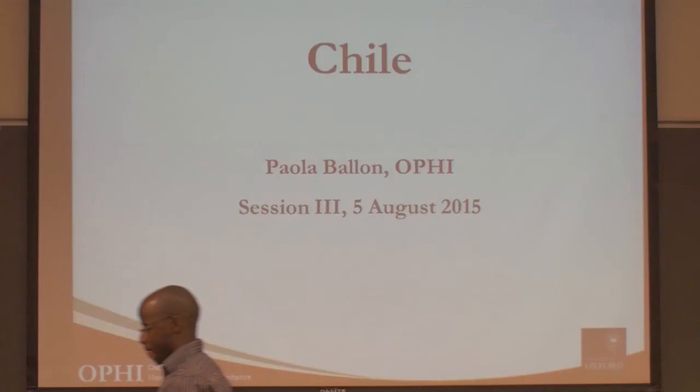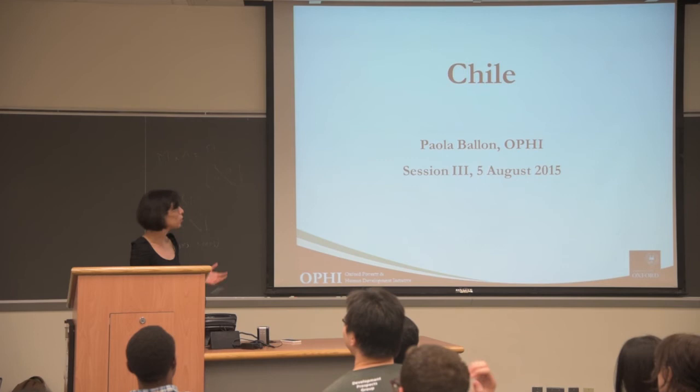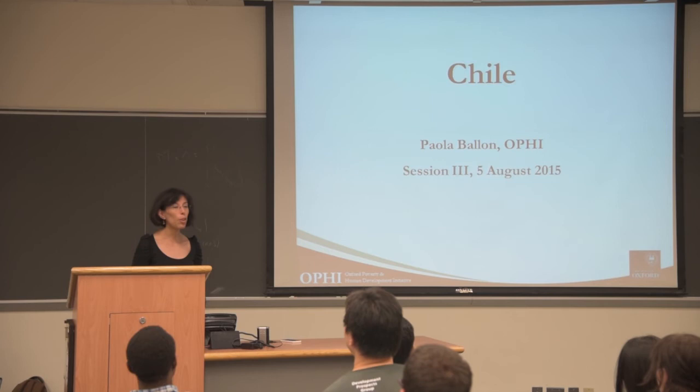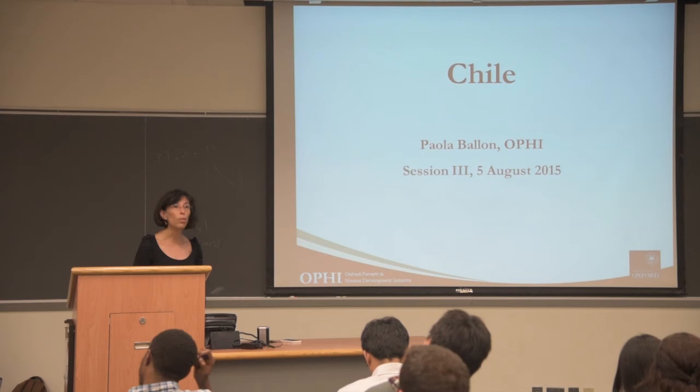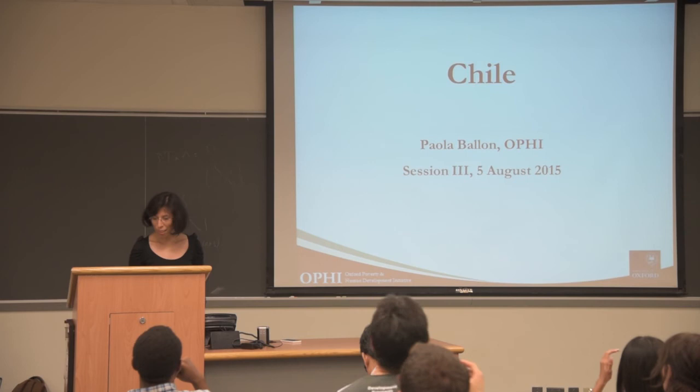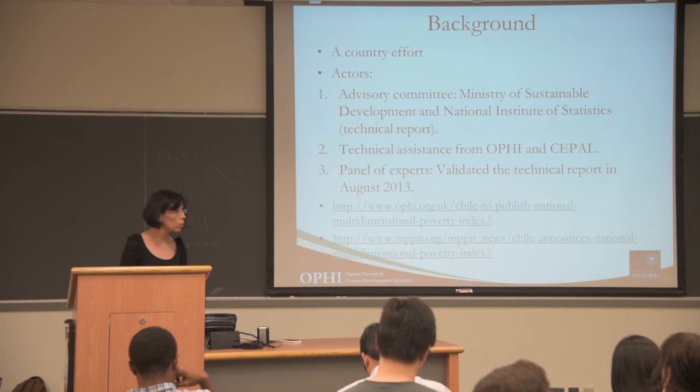Now let me present a few slides on Chile. Chile is a country in South America — one of the most developed — and apart from Mexico and Colombia, it is the third country in South America implementing a national poverty measure following the Alkire-Foster method. There's more information on the OPHI website and multidimensionalpovertypeernetwork.org. In Chile's case, it's essentially a country effort that began around five years ago, with an advisory committee composed of the Ministry of Social Development and the National Institute of Statistics.